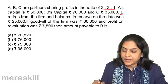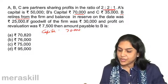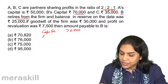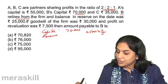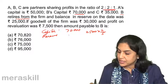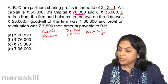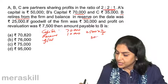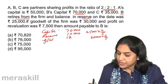Who's retiring? B is retiring. B's capital is 70,000, which has to be paid to him. The balance in reserve is Rs 25,000. B's share is 2/5 of Rs 25,000, that is Rs 10,000. Goodwill of the firm is Rs 30,000. His share is again 2/5 — that is Rs 12,000.